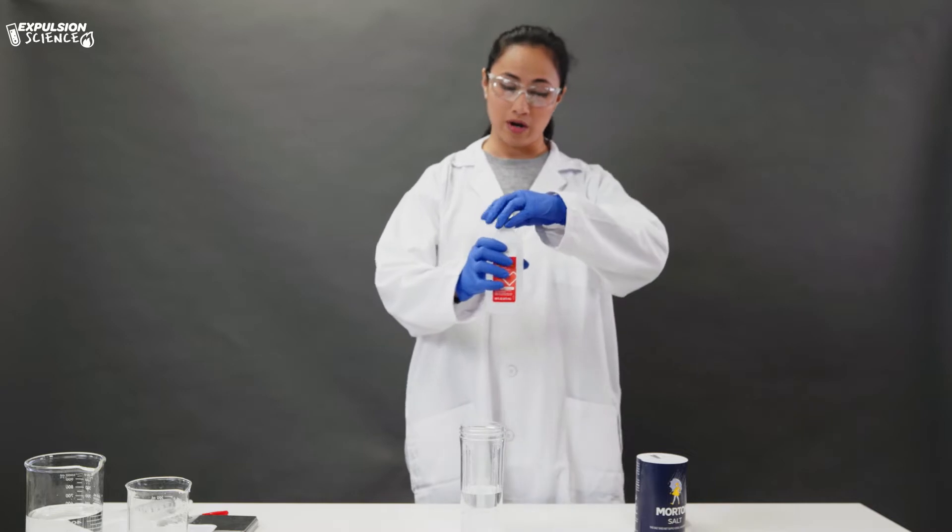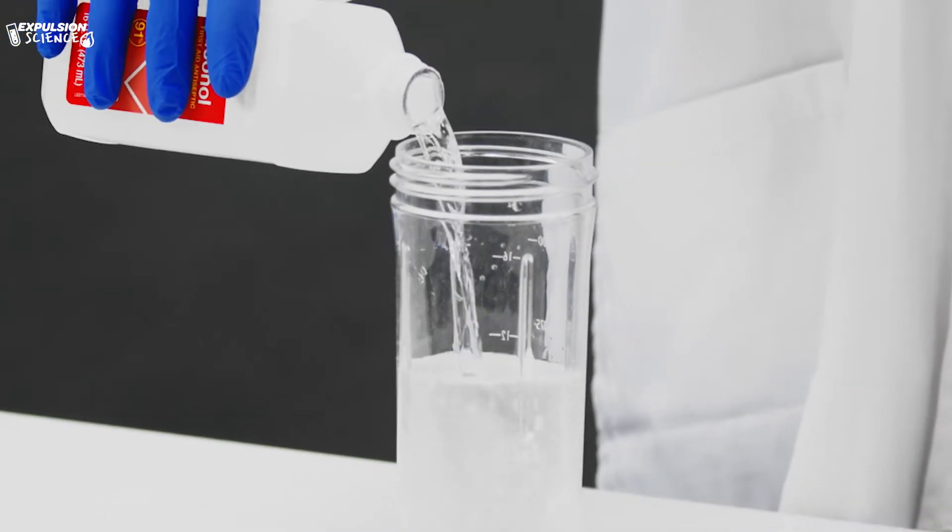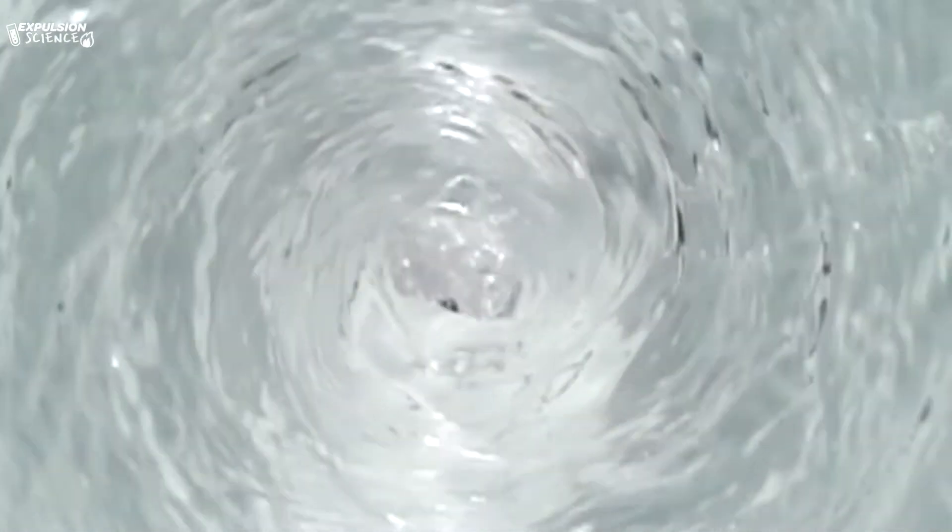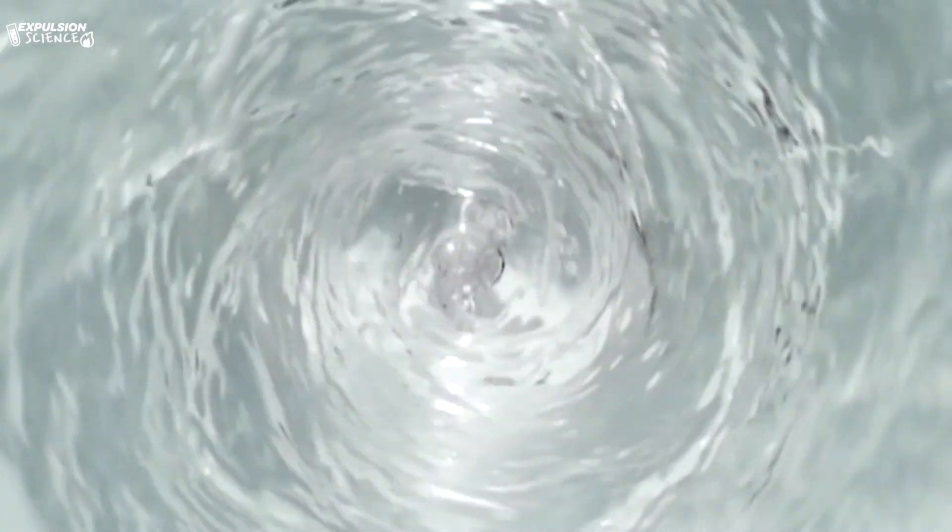Next we're going to get our alcohol. Now alcohol and water are said to be what we call miscible, and that just means that these two liquids can be mixed together.